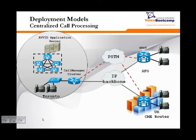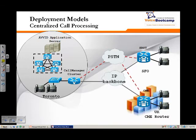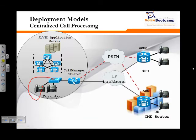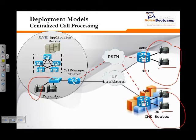The deployment scenario that you'll most likely be seeing is called centralized call processing. In a centralized call processing deployment, you have a central office with a cluster of one or many publishers, with additional services like voicemail, Unity, UCCX, and so on. You have your head office phones, and you could have a branch office in the UK or in San Francisco. These branch office phones are registered over the WAN to your call manager. This is called centralized call processing.